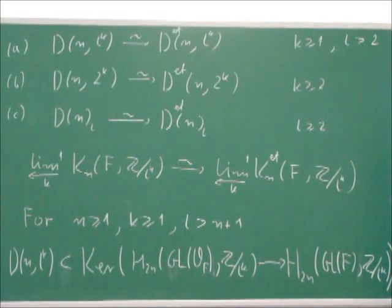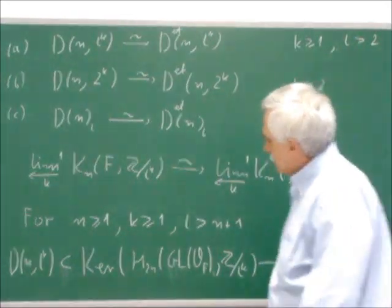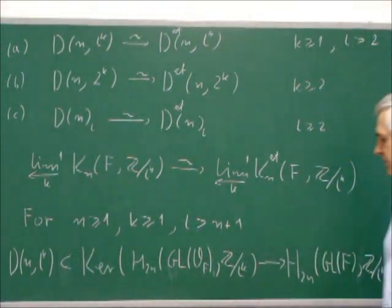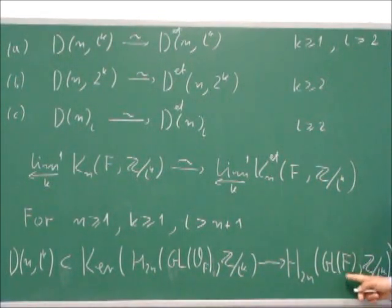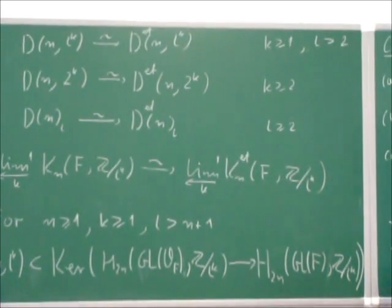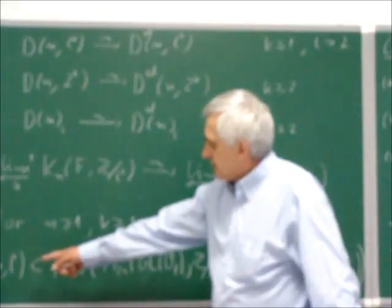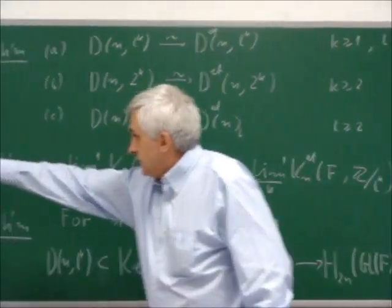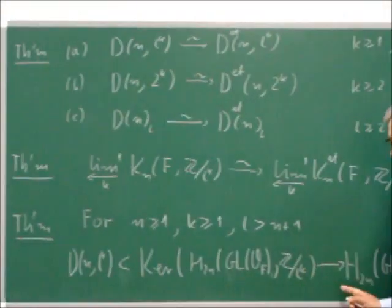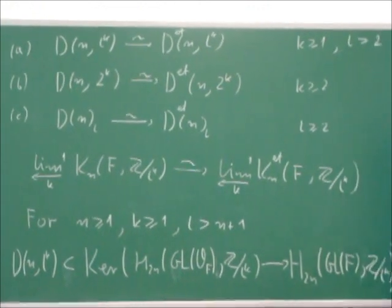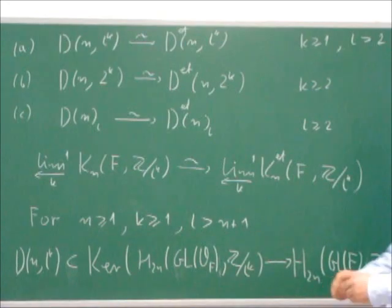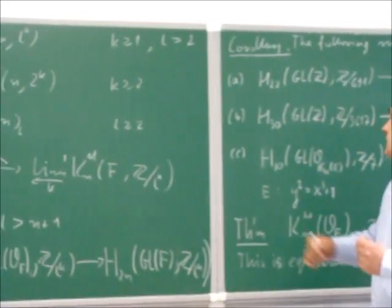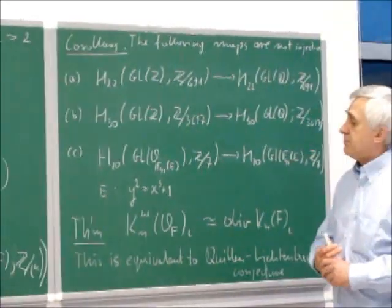Going further to results concerning the kernel of natural map from homology of GL of O_F to homology of GL of F with finite coefficients, we see that this group D(n,L,K) is containing the kernel of this natural map. And this gives us possibility to get very nice examples of the natural map not being injective.